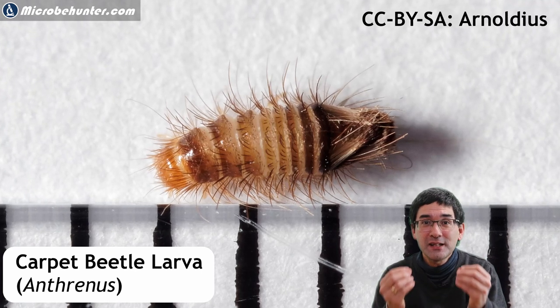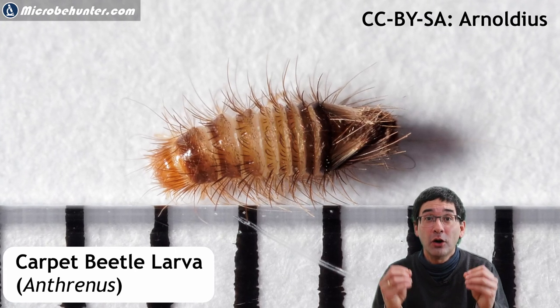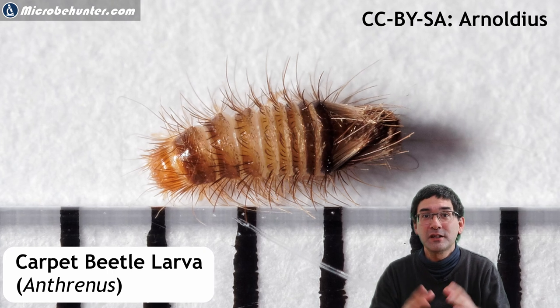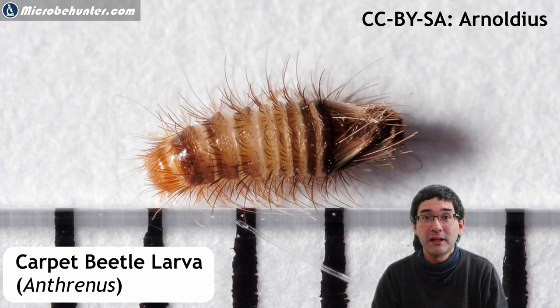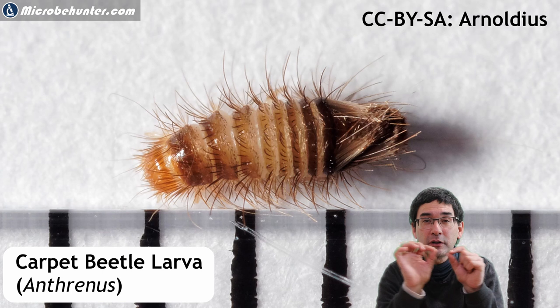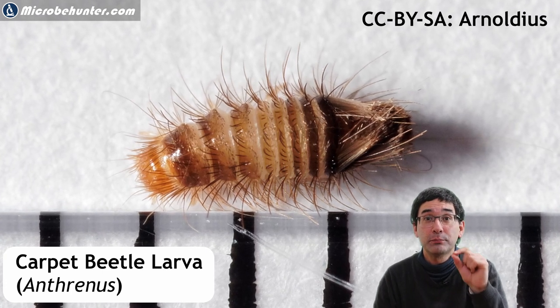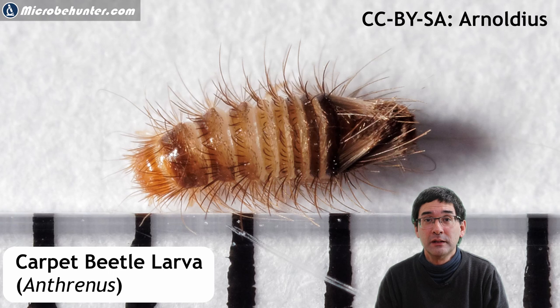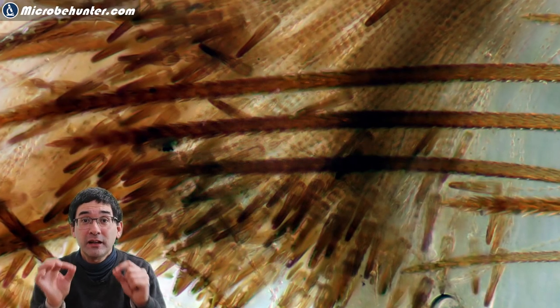It is the bristle of the larva of a carpet beetle. Here this picture is one that I got from Wikipedia. If you look carefully there are many tiny little bristles there, and it's actually a bristle of the carpet beetle. I then did find a larva and I put the larva under the microscope and I found a lot of these structures there indeed.